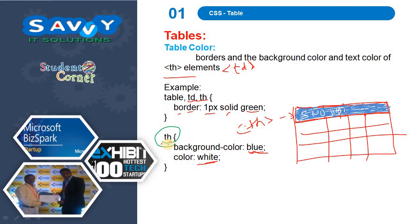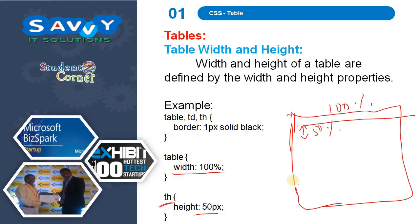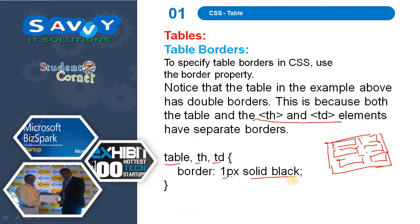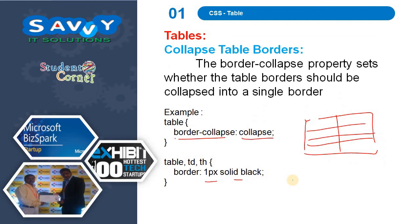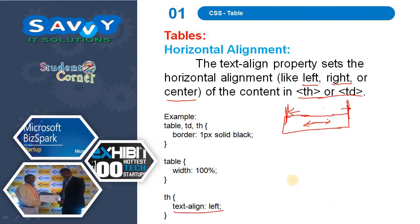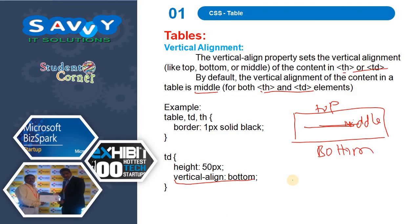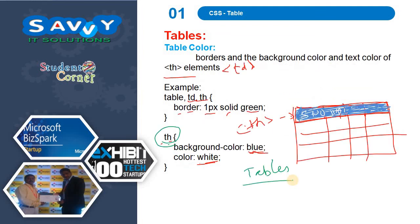In this section what we learned is: tables, table borders, collapsed table borders, table width and height, horizontal alignment, vertical alignment, table padding, and table color — changing a few things to give more visual appeal to the table. In the next video we will do a complete practical session covering everything we learned in this video. Thank you.